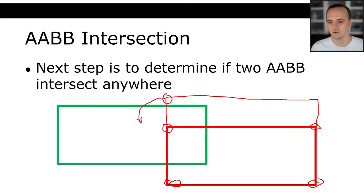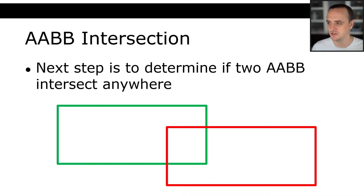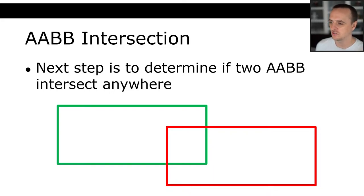It might seem like we're going to be stuck using those 16 different calculations, but it turns out we can use a really cool mathematical shortcut that is much easier to compute to detect the intersection of two axis-aligned bounding boxes. Let's go through the derivation of that — I want you to understand how it works, so we're going to derive that formula now.